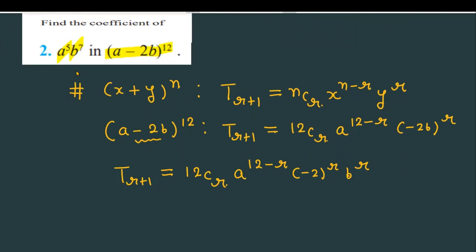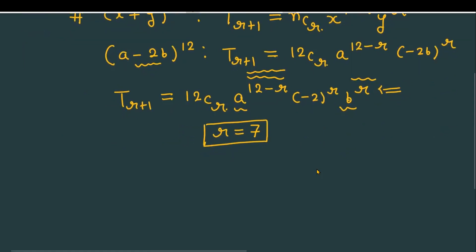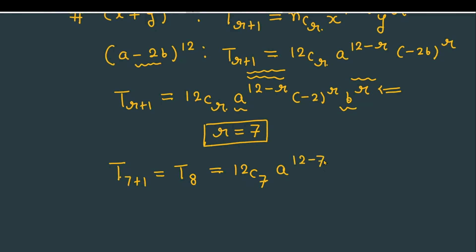Now we check our requirement: we need a to the power 5 and b to the power 7. So r equals 7. Replacing r with 7, the power of a becomes 12 minus 7 equals 5, which matches. So T₈ equals 12C7 multiplied by a raised to the power 5, multiplied by (-2) raised to the power 7, and b raised to the power 7.